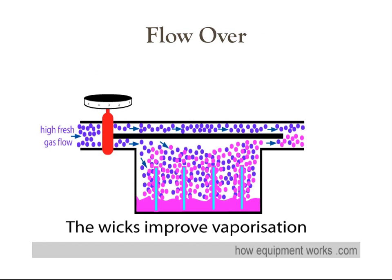Most of our vaporizers are flow over, meaning the gas is channeled through the vaporizing chamber and flows over a wick system. The wicks are saturated with liquid anesthesia, so the vapor also becomes saturated with this anesthetic. The flow-over method of vaporization contrasts with the bubble-through method used for the copper kettle system.